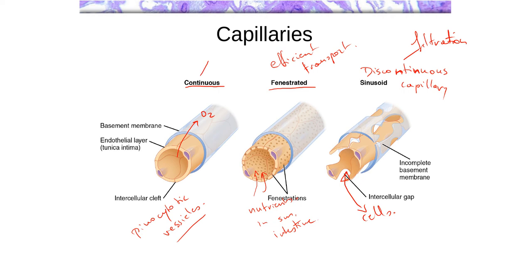Continuous and fenestrated capillaries are very similar to each other — the difference is visible under the electron microscope but not the light microscope. These are generally between about 6 to 10 micrometers in diameter, just large enough to allow red blood cells to pass through them, and can go as small as about 4 micrometers. Sinusoids are quite a bit larger, typically about 30 to 40 micrometers in diameter. This larger size allows blood flow to slow down, which is ideal for having filtration happen.